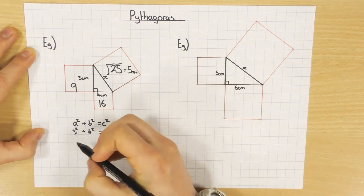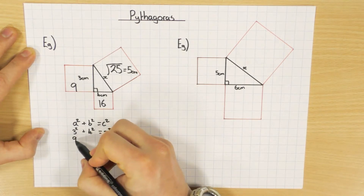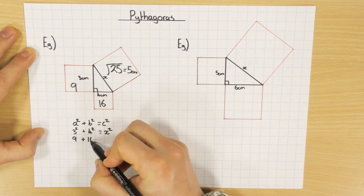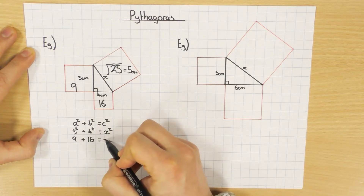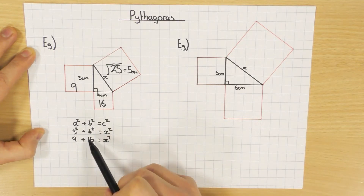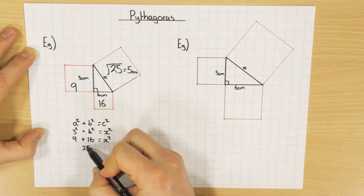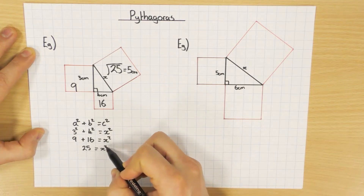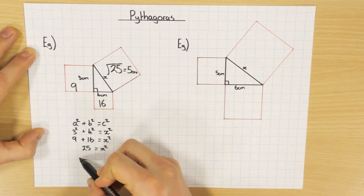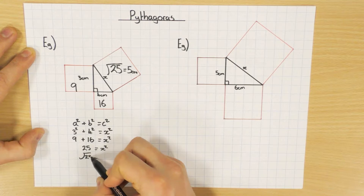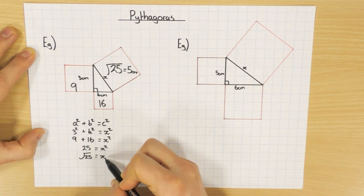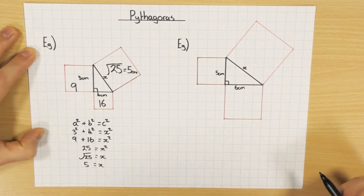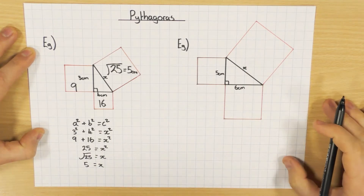Then you just work it out: 3 squared is 9, plus 4 squared is 16, keeping that as x squared. Simplify: 25 equals x squared. Then to get rid of the squared, you square root both sides — square root of 25 — and therefore 5 equals x. So that's the other way you can look at doing Pythagoras. I'll do both ways for all the examples, because I know some people have been taught different ways.